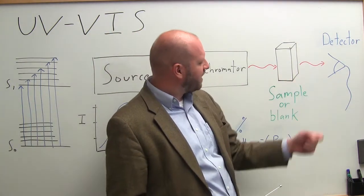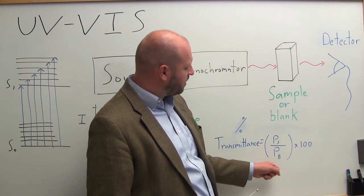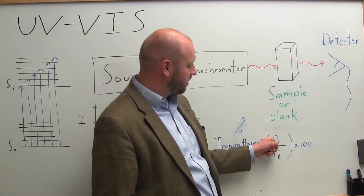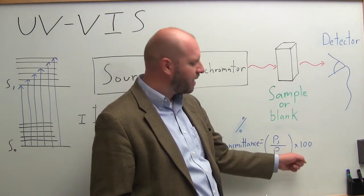I'm then going to detect that intensity using my detector. Here I have the percent transmittance, and that's calculated as the power of light through my sample divided by the power through my blank times 100.